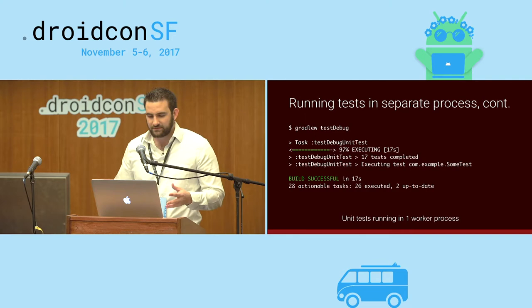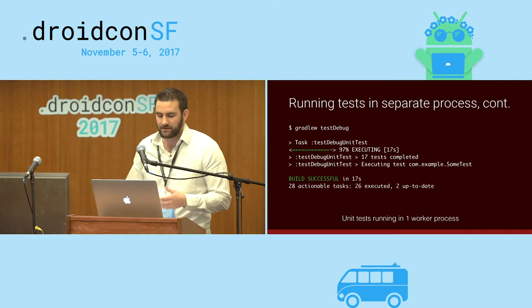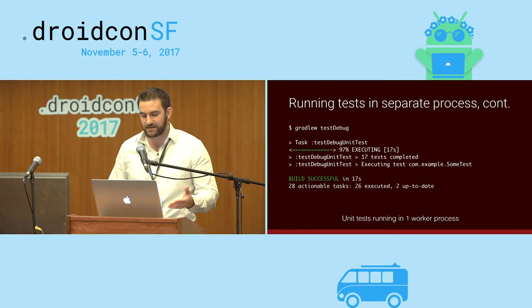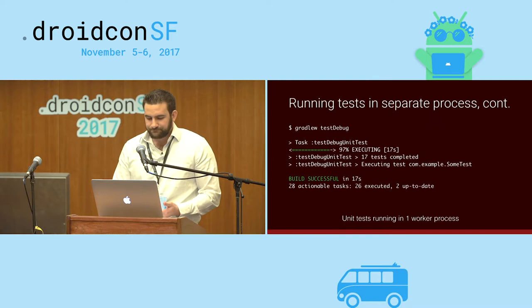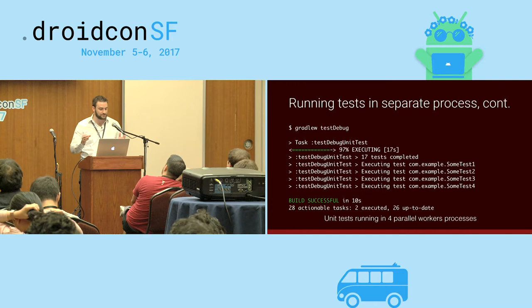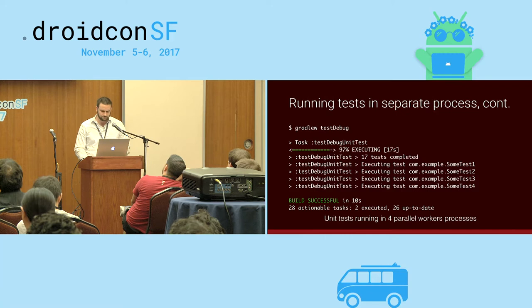When you run a Gradle test debug, it kicks off a single worker that executes all the tests one at a time. But with the forking snippet added, you can run four tests at a time. If you have hundreds of tests, that's a huge benefit. The Gradle repository source code runs their tests in parallel too. For larger multi-module projects, I highly suggest running your tests in separate processes.